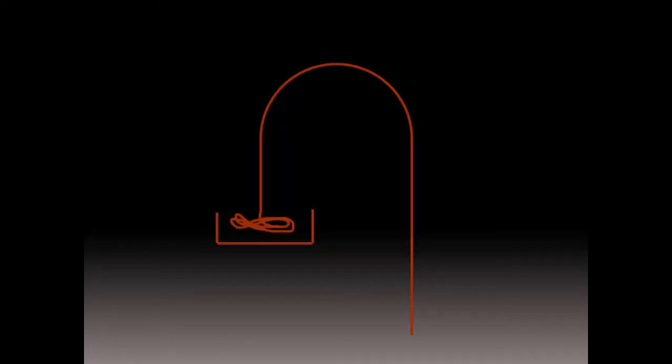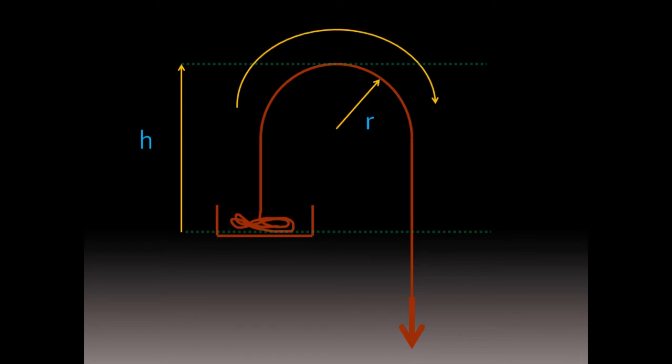We can represent the free body diagram of the chain with a drawing like this. The chain goes upwards a distance h, curves around a radius r, descends back to the level of the container distance h, and then continues downwards, large H.